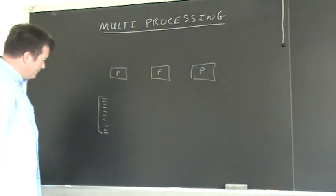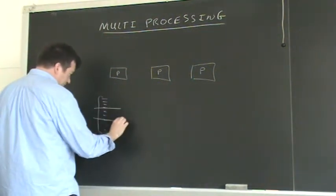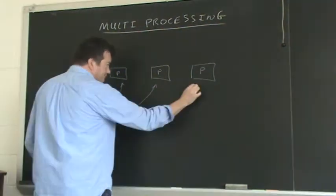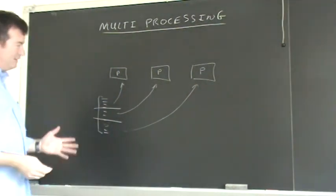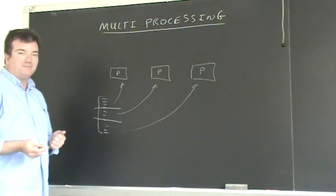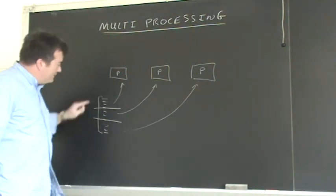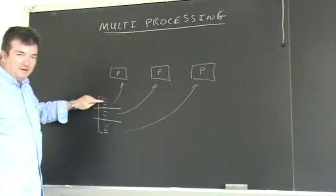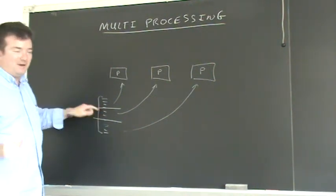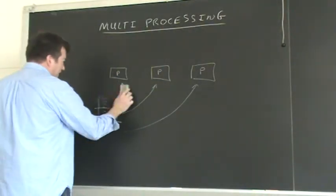Now if we could divide our program into three equal sections and put one section on each processor, it looks like we could get the program to run in one-third the time — if we were lucky. It might not be the case, because maybe there are some computations that have to be done before others could even start, and that would cause us to not be able to get what might be called a linear speedup.